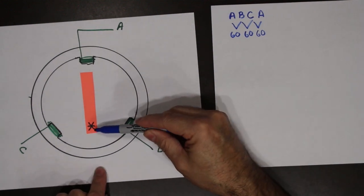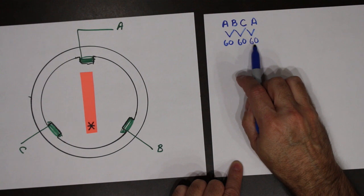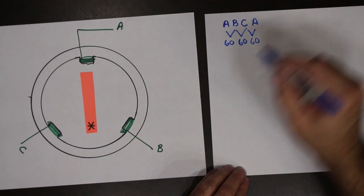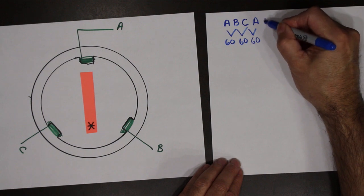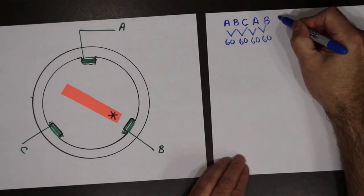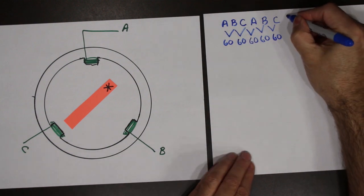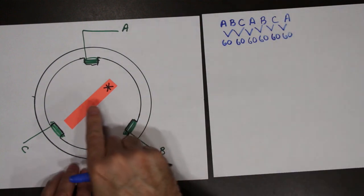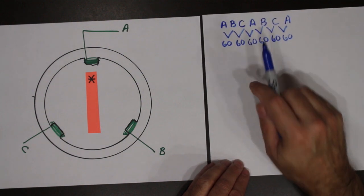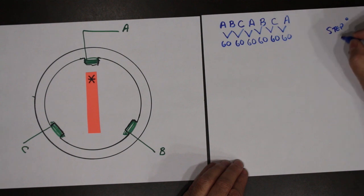Continuing: energize A, it attracts the closest part — another 60 degree step. I started with the star up top and now it's at the bottom; I have rotated 60, 120, 180 degrees in three steps. Continuing to B — that's another 60 degrees — then C, another 60 degree step, then back to A, another 60 degree step. So every step I am moving 60 degrees. My step angle for this example is 60 degrees.